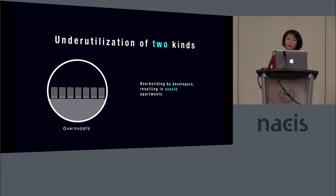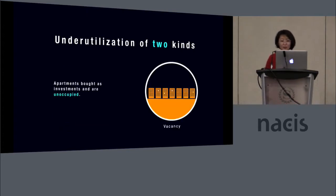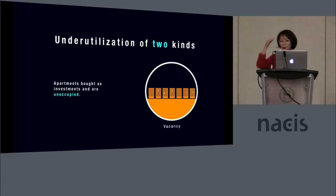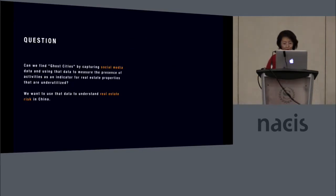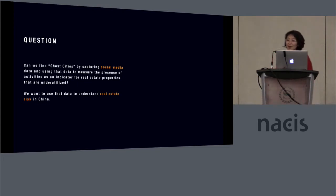By oversupply, we mean when developers build buildings that are unsold. But the other kind of underutilization is vacancy — apartments have been built and sold, but no one lives there. Sometimes people buy apartments for investment or land speculation purposes. Other times, people buy spare apartments for their children or elderly parents in the future. The question is: can we find Ghost Cities by capturing social media data and use it to create an indicator for underutilized apartments?